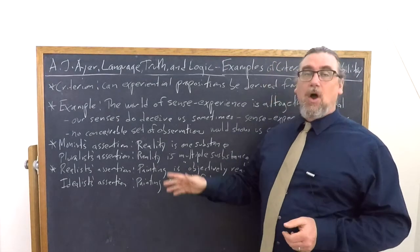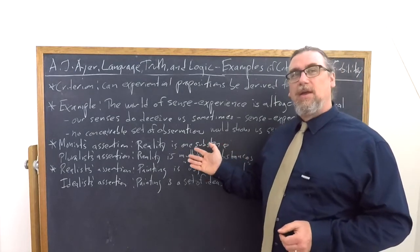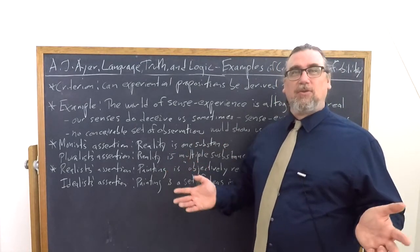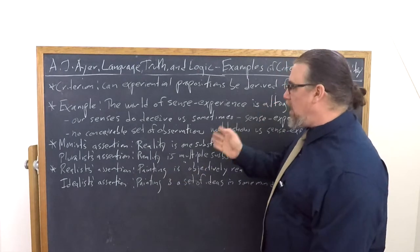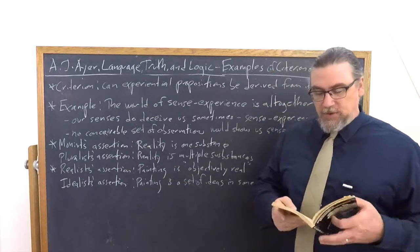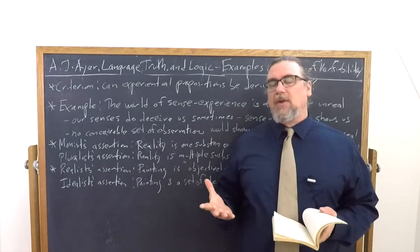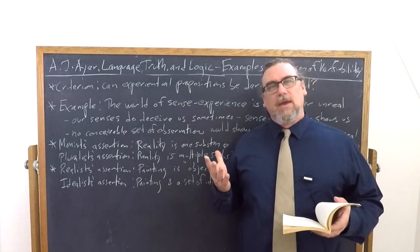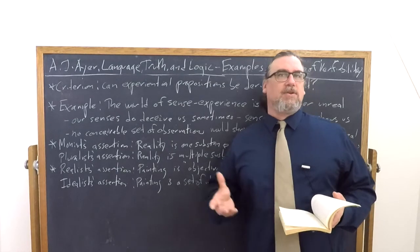The pluralist is saying, no, there's more than one thing. Could be a million things. Could be three things. Could be whatever you want. They're just saying reality is multiple substances. Now, that sounds like it makes sense, right? Isn't there a possible controversy there? Ayer says, well, how would you verify that?